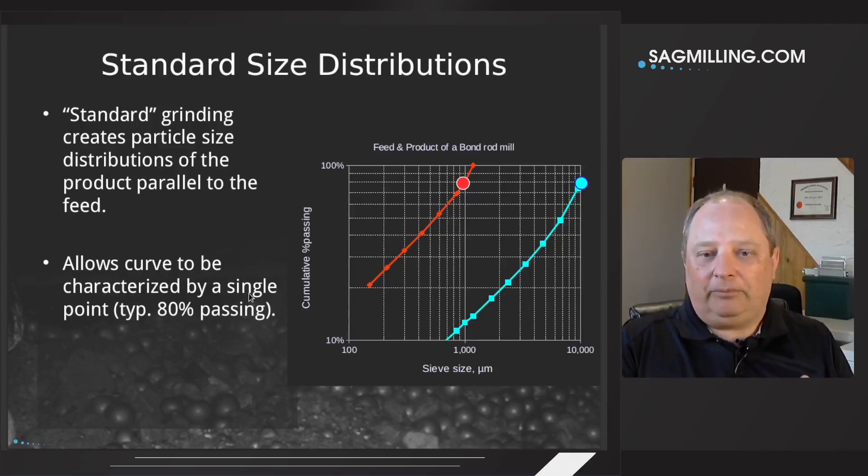This is a feed in blue and a product in red from a laboratory bond rod mill. As it turns out, this is a classical piece of equipment. And you can see the way that these two diagrams, these two lines are drawn, they are basically parallel in this log log space. Because they are parallel in the log log space, we can characterize this size distribution from a single point. Because we know the slope, if we just track that particle size where we're following, and usually we use the 80% passing point, we can then reconstruct the entire size distribution just from that one point. So in this example, I'm showing a dot on the feed that shows what we would call the F80 point, the 80% passing size, which is just over 10 millimeters of what went into this mill. And then the product size, the P80, is just under one millimeter that came out of the mill.